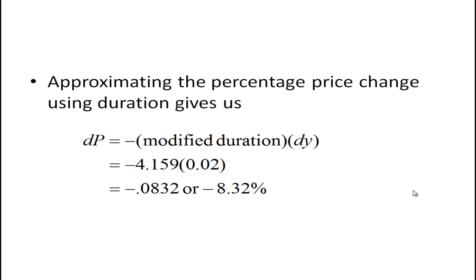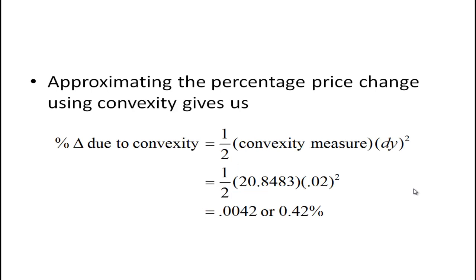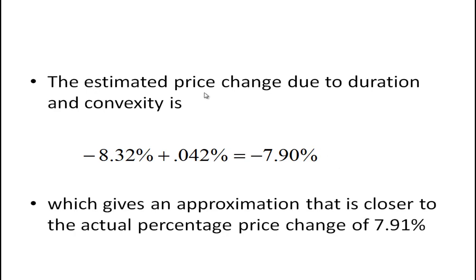But we saw that it changed by 7.91%, so let's see what happens if we use convexity. The percentage change due to convexity is one-half times the convexity measure — 20.8483 — times the change in interest rate squared, which equals 0.0042 or 0.42%. Putting those together, the estimated price change due to duration and convexity is minus 8.32% plus 0.42% from the convexity adjustment, giving minus 7.90%.